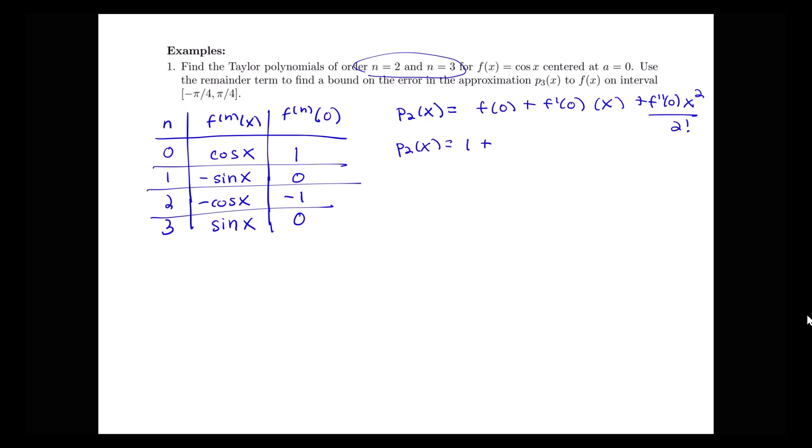So for p2 of x, I'm going to have 1 plus, looks like I've got 0 times x plus my second derivative is negative 1. I have negative 1 times x squared over 2 factorial, or p2 of x equals 1 minus 1 half x squared. Let me write that as 1 half x squared over 2.